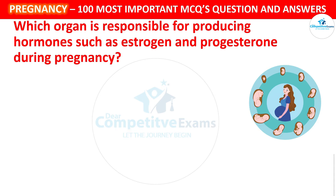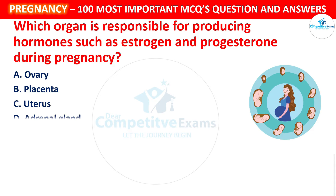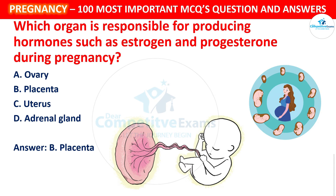Next question: Which organ is responsible for producing hormones such as estrogen and progesterone during pregnancy? Your options: Ovary, Placenta, Uterus, or Adrenal gland. The correct answer is Placenta. The placenta takes over the production of hormones like estrogen and progesterone to support pregnancy after the first trimester.